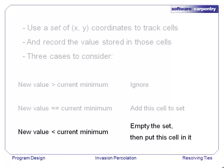Case 3, the new value is less than the current minimum. In this case, we replace all of the coordinates currently in the set with the coordinates of the new cell and reset our minimum to be this new value.